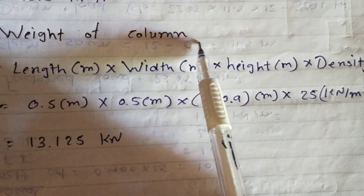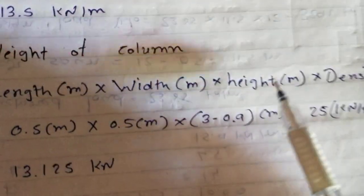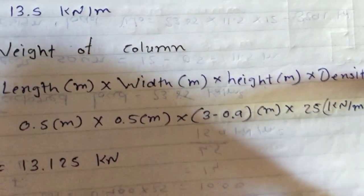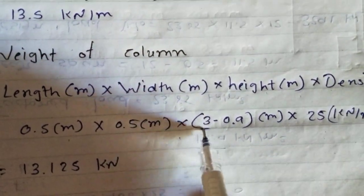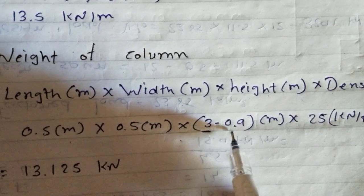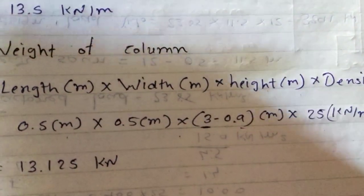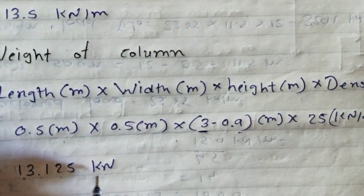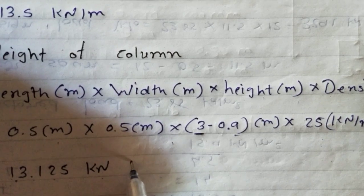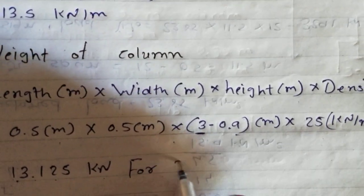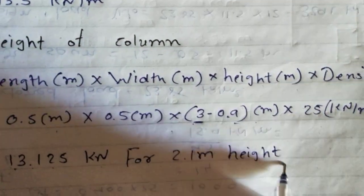Weight of column on each floor. This is length, this is width, and this is height, and this is density. Length will be 0.5 meter, width will be 0.5 meter, height, this is 3 meter overall height of floor, and we will deduct 0.9 from depth of beam, and the density of 25 kN per meter cube. We got 13.125 kN from 2.1 meter height. This is 3 minus 0.9, this is 2.1 meter.